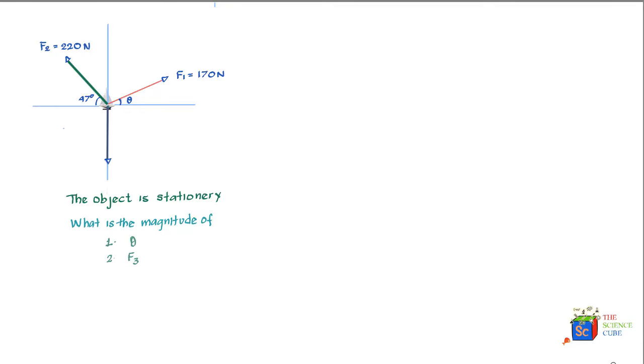Here we have a question where a boat is getting pulled by three different forces acting in three different directions. You have one force of 170 Newton, another of 220 Newton, and a third force which is unknown, F3. They've also given the angle of two of the forces: one is 47 degrees and F3 is a vertical force acting in the downward direction. What they want to know is what is angle theta and what is force F3 if the boat is stationary, that is, it is not moving.